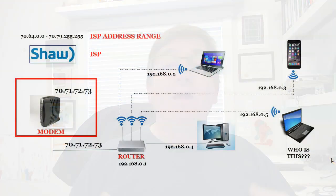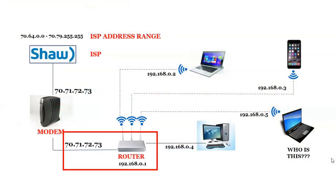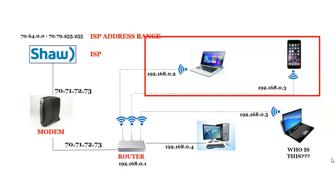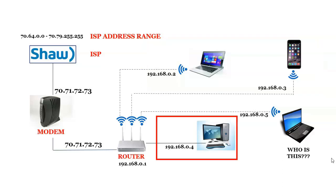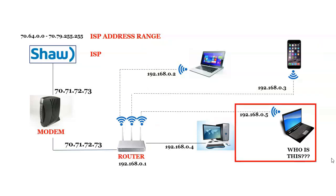Because in a normal home network, we've got a modem and we've got a router — sometimes the same device. These will have the outward-facing IP address, and everything connected behind it is going to use that public IP address to access the internet. Here we can see we've got a couple of wireless devices, a wired device, and this other device way over here — this wireless device.